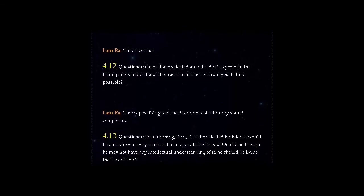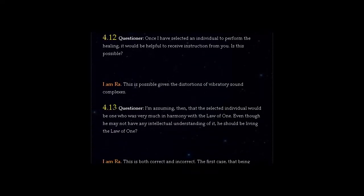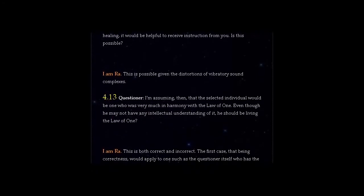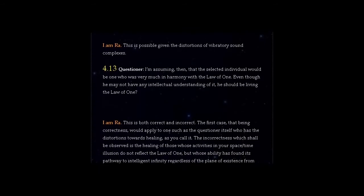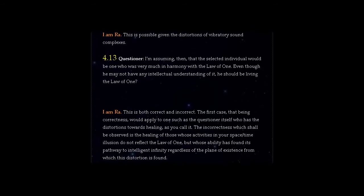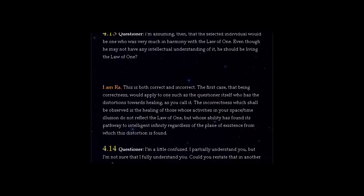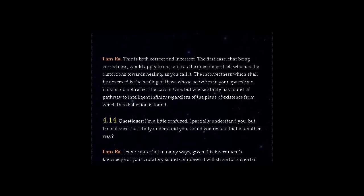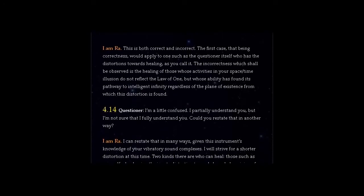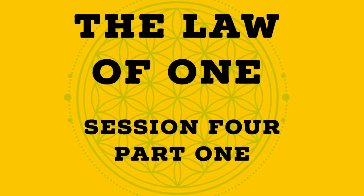Question 4.13: I am assuming, then, that the selected individual would be one who was very much in harmony with the Law of One. Even though he may not have any intellectual understanding of it, he should be living the Law of One. I am Ra. This is both correct and incorrect. The first case, that being correctness, would apply to one such as the questioner itself who has the distortions towards healing, as you call it. The incorrectness which shall be observed is the healing of those whose activities in your space-time illusion do not reflect the Law of One, but whose ability has found its pathway to intelligent infinity regardless of the plane of existence from which this distortion is found.